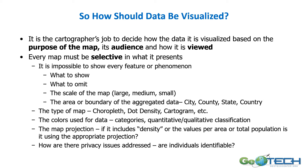We can also look at different types of maps — whether it's going to be a choropleth, a dot density, or others. Another important aspect is how colors are chosen and how categories, quantitative, or qualitative classification of data is handled. We'll also look at how map projections influence how data is visualized, which is particularly important if you're not going to normalize by the area of the aggregated boundary. We'll also look at privacy issues — can an individual be identified from the data visualization? Individuals generally should not be individually identifiable.